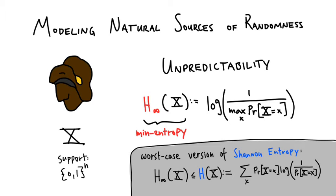We say that a randomness source x — which throughout this talk we think of as supported on bit strings of length n — has the minimal notion of being weakly entropic that we want here: a notion of unpredictability. We want to extract from sources that have sufficient min-entropy. Min-entropy is the logarithm of the inverse of the probability of the most likely event. In other words, a source has min-entropy k if no outcome occurs with probability greater than 2 to the minus k. You can think of this as a worst-case version of Shannon entropy.